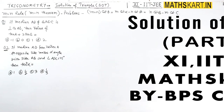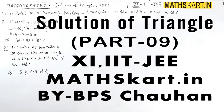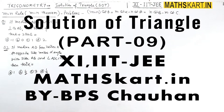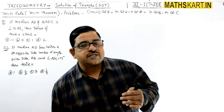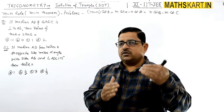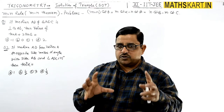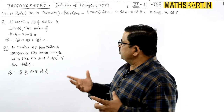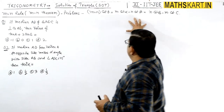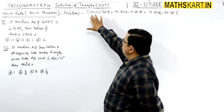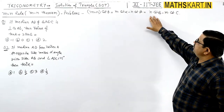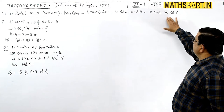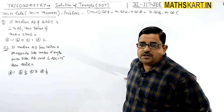Good morning friends. We have done the MN theorem in the theoretical concept, where values have a ratio given. The theorem is represented in two ways: (M+N)cot(θ) = M·cot(α) − N·cot(β), or it can be N·cot(B) − M·cot(C). These are the angles.